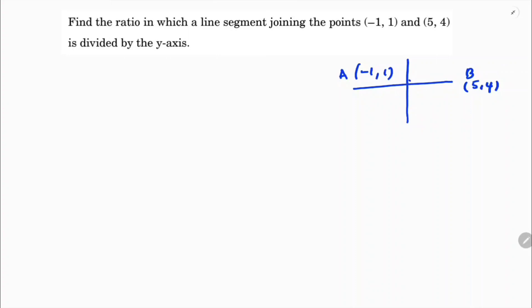So we know this point will be like (0, y) because we don't know exactly at which point it is divided — we just need to find the ratio. Let P divide in ratio k:1. I will take the section formula: m1·x2 + m2·x1 by m1 + m2.